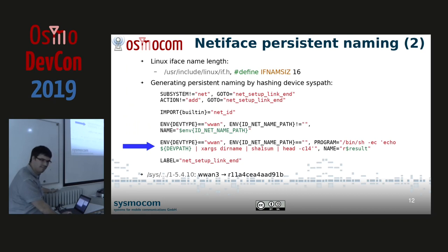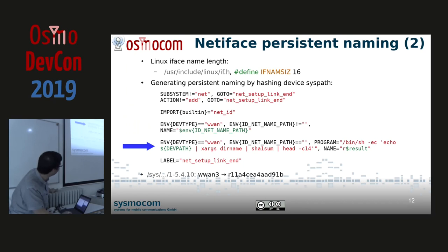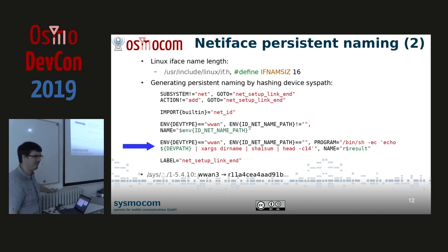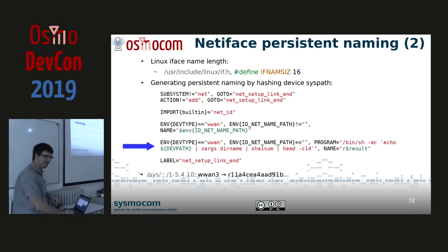No collisions yet — and if we have some, we can rearrange some USB paths to avoid them. We're not running a million modems, so it should be fine. For some paths we still use the standard persistent naming, so there are even fewer collision possibilities.